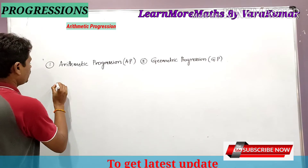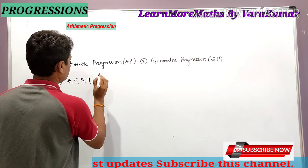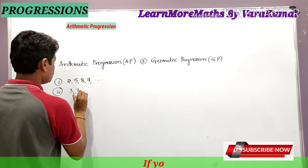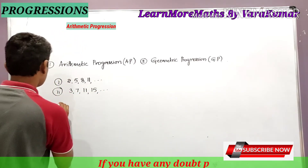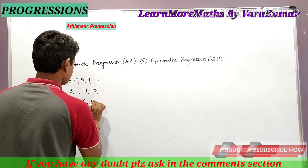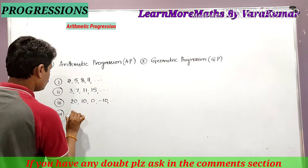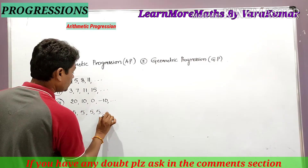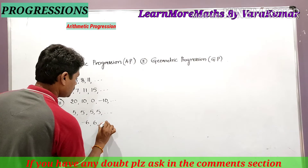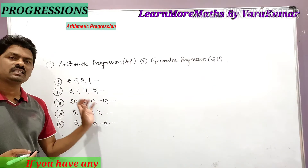Before defining AP, I am writing some lists of numbers. First list: 2, 5, 8, 11, and so on. Second list: 3, 7, 11, 15, and so on. Third list: 20, 10, 0, -10, and so on. Fourth list: 5, 5, 5, 5, and so on. And one more: 6, -6, 6, -6, and so on.